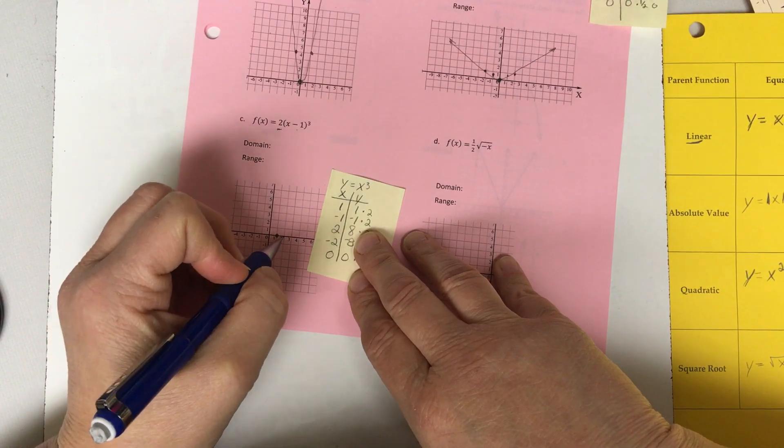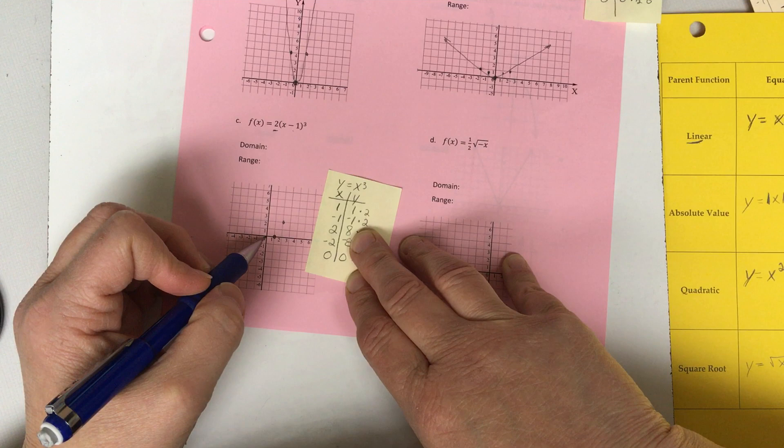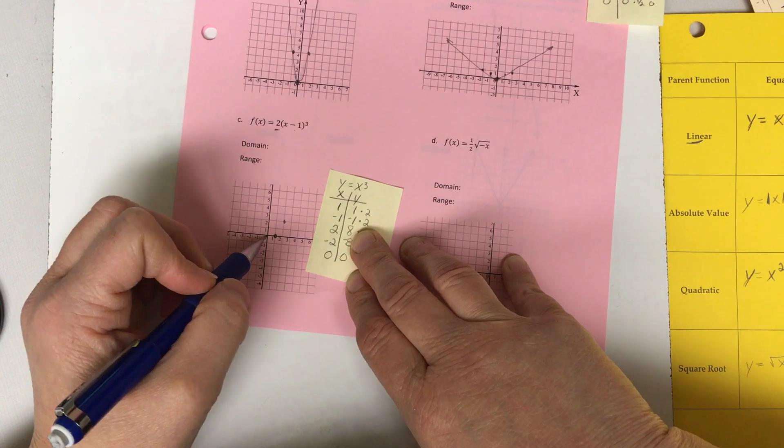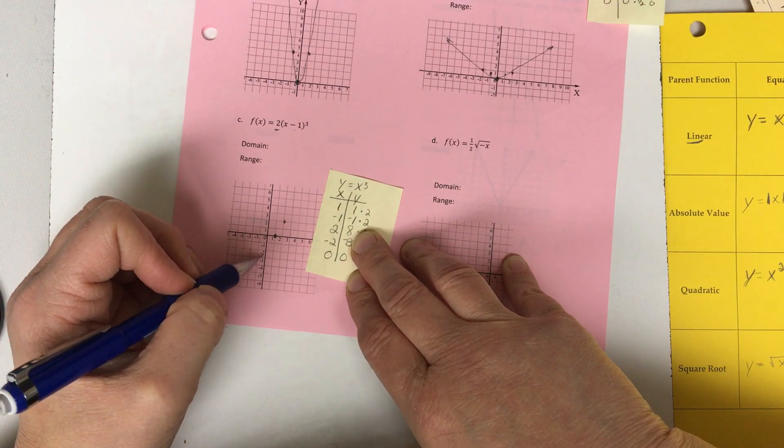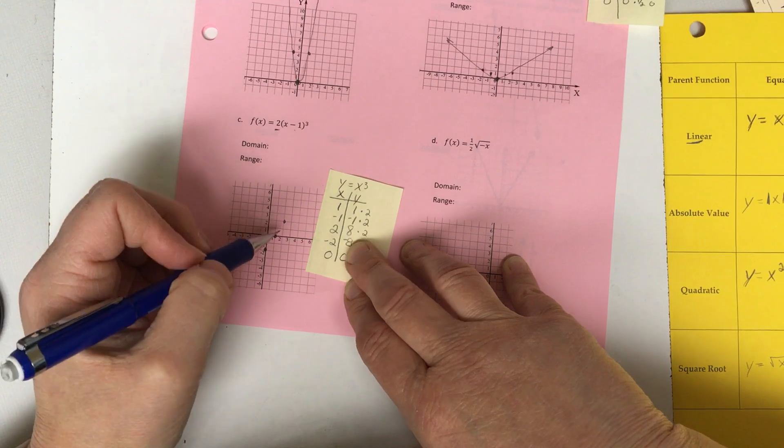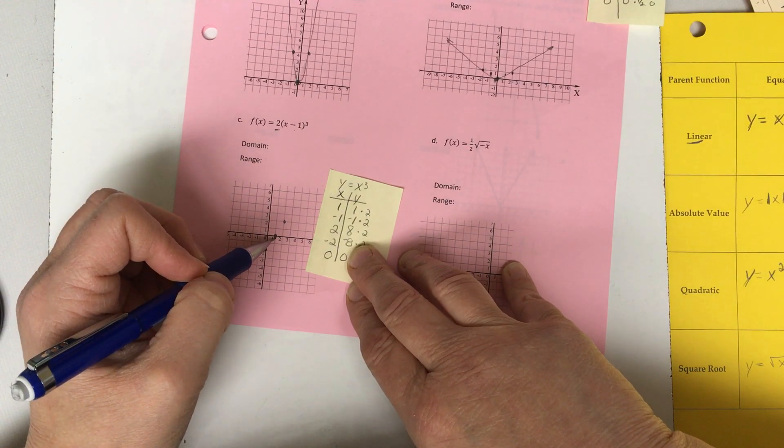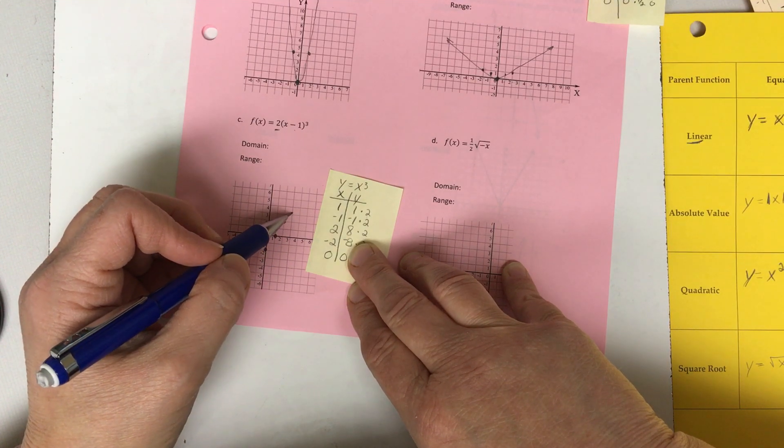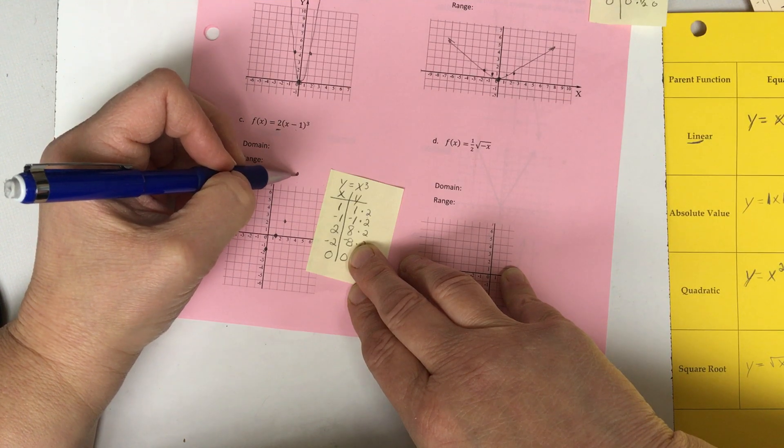So over one. Up two. One, two. Negative one down two. One, two. Positive two. Back to my starting point. One, two. And up eight. One, two, three, four, five, six, seven, eight. So it's about here.